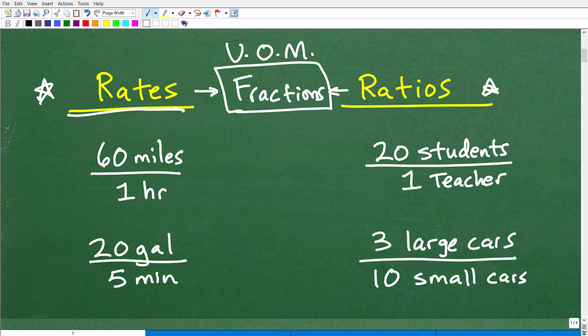We have to discuss something called the units of measure. Rates and ratios are measuring something very specific. A fraction might be like two-thirds - that's just a fraction. But what makes a rate or ratio is the following.